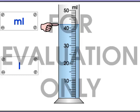Not all graduated cylinders are the same. This 100 milliliter capacity graduated cylinder counts by 20s. 20, 40, 60, 80, 100.